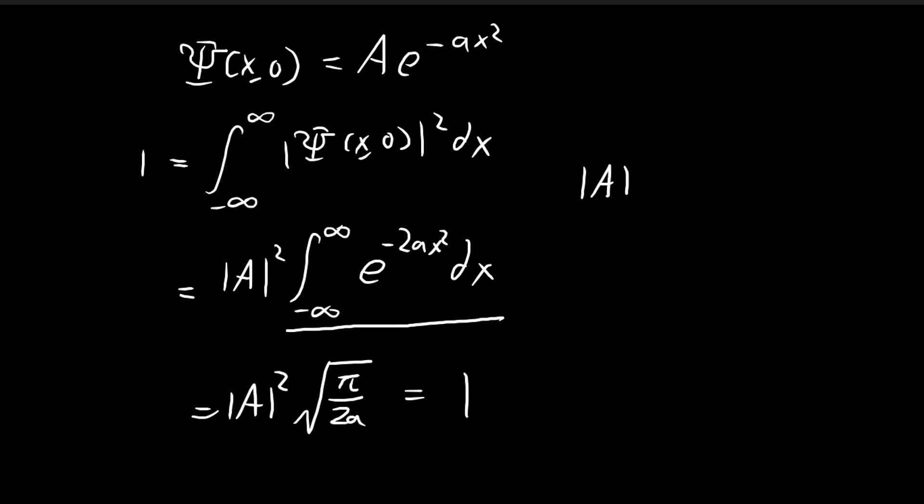That means the absolute value of A squared is equal to the square root of 2a divided by π. We can choose A to be the simplest form so that it's only just a real number. It could be anything, could be a complex number, but we are free to choose the simplest form. We just choose the form where A is just a single real number, so there are no imaginary components.